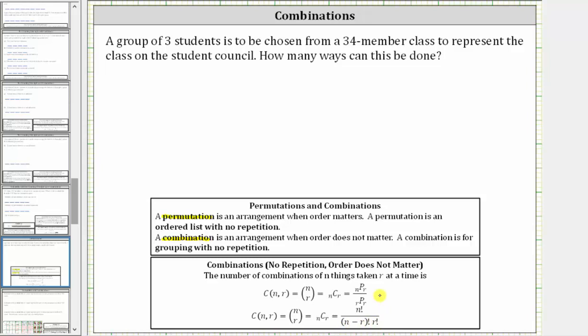Because we are selecting groups of three students from a 34-member class, we can form a total of 34 choose three groups. We can express 34 choose three using this notation, this notation, or this notation. In each case, n is equal to 34, and r is equal to three.